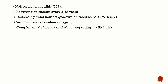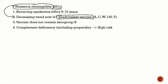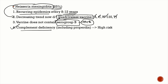The second most important cause is meningococcus — Neisseria meningitidis — accounting for 25% of bacterial meningitis. A quadrivalent vaccine confers protection against serogroups A, C, W135, and Y, but serogroup B is not included — an important MCQ. Most meningococcal meningitis today is due to serogroup B. Complement deficiency confers very high risk, and epidemics recur every 8 to 12 years.